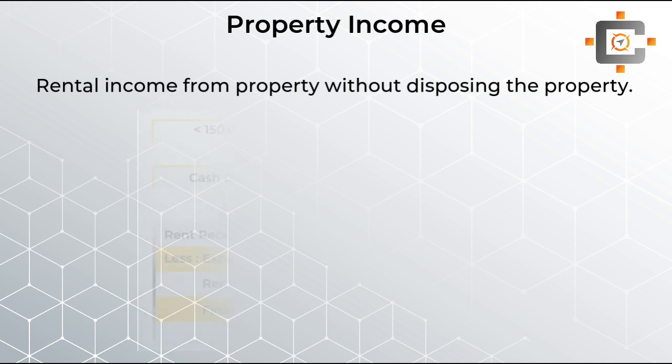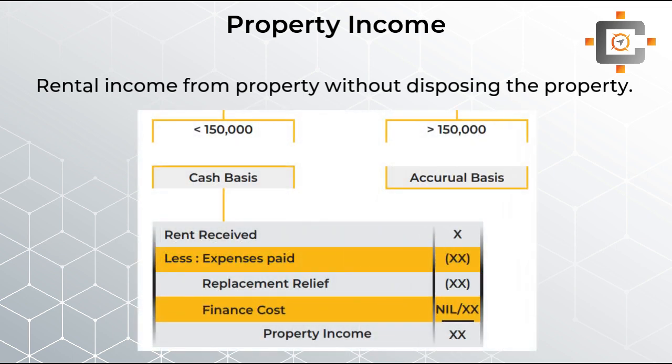The important rule over here is that if your annual rental income is less than £150,000, then you have to follow the cash basis of accounting. You can see on the screen a pro forma where rent will only become taxable when you actually receive that rent. But if your annual rent is more than £150,000, then you compulsorily have to follow the accrual basis of accounting.